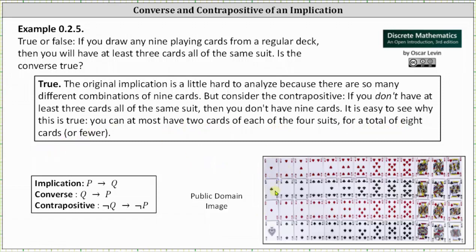For example you could have two hearts, two clubs, two diamonds, and two spades. But as soon as you pick that ninth card you are going to have at least three cards all of the same suit.